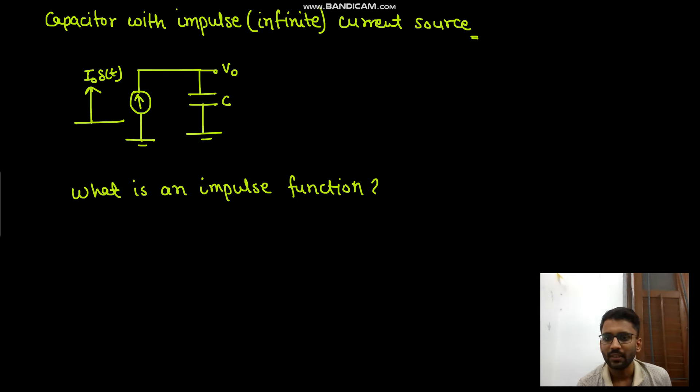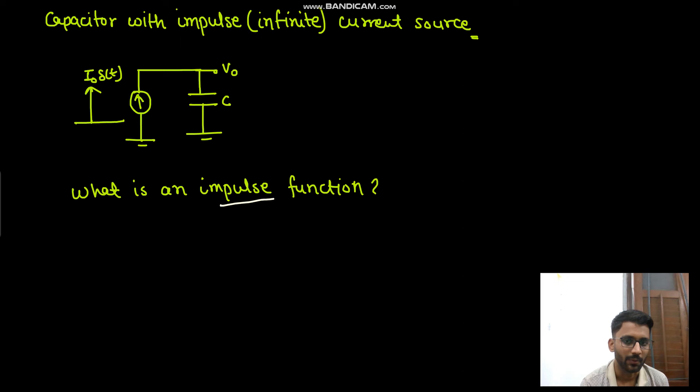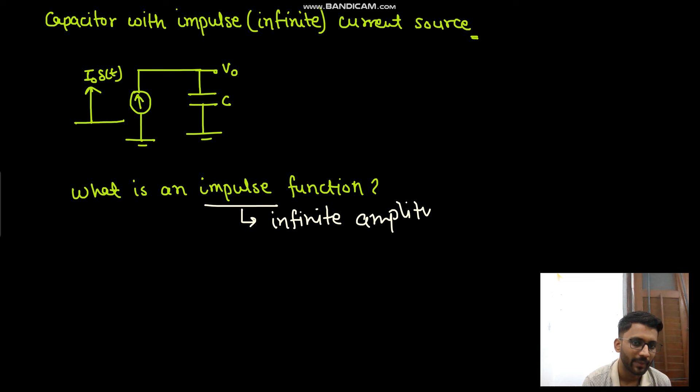Hello everyone. Now we will see how a capacitor behaves when it is driven by an impulse input — an impulse or infinite current source. So what is an impulse function? An impulse has infinite amplitude or magnitude but finite area.